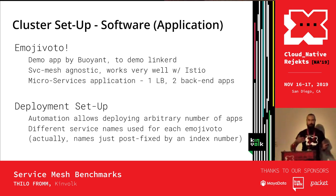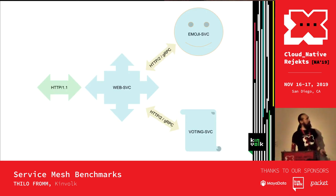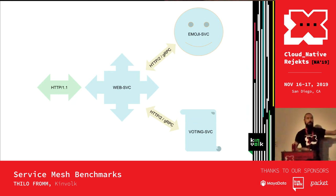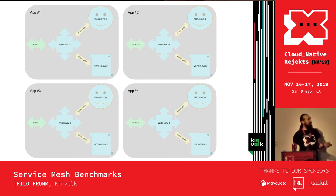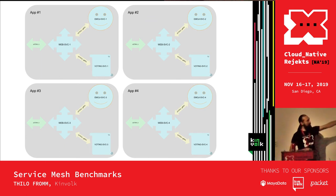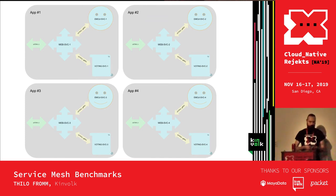We wanted a cluster of multiple app instances — each consisting of multiple microservices — running simultaneously for the benchmark. We ended up using around 20 instances of EmojiVoto. EmojiVoto has a load balancer microservice (WebSVC) that takes HTTP requests, an EmojiSVC serving emoji pictures, and a VotingSVC for voting on emojis — with EmojiSVC and VotingSVC talking gRPC to WebSVC. Each microservice is a separate pod, and all pods are cross-scheduled across the four application nodes.